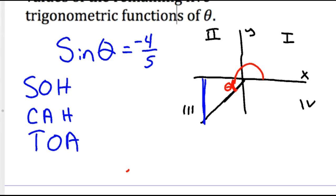And so we're going to do the opposite and hypotenuse part for sine. So that means this is negative four. So let me write that back in there. So this is negative four, and your hypotenuse is five.